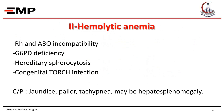Hemolytic anemia: causes include RH and ABO incompatibility. In RH incompatibility, the mother is RH negative while the baby is RH positive. In ABO incompatibility, the mother is group O while the baby is A or B. Other causes: G6PD (glucose-6-phosphate dehydrogenase) deficiency, hereditary spherocytosis, and congenital TORCH infections — Toxoplasmosis, Other infections, Rubella, Cytomegalovirus, and Herpes simplex. The clinical picture includes jaundice with pallor, tachypnea, and possible hepatosplenomegaly.